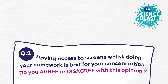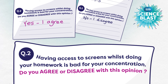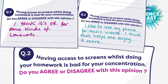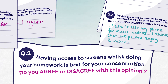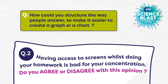They asked people if they agreed with an opinion. Some people wrote a simple yes or no answer, but most people wrote a few sentences, and the answers were all very different and complex. Have you any ideas of how they could have structured the way people answered question two to make it much easier to produce a graph at the end?